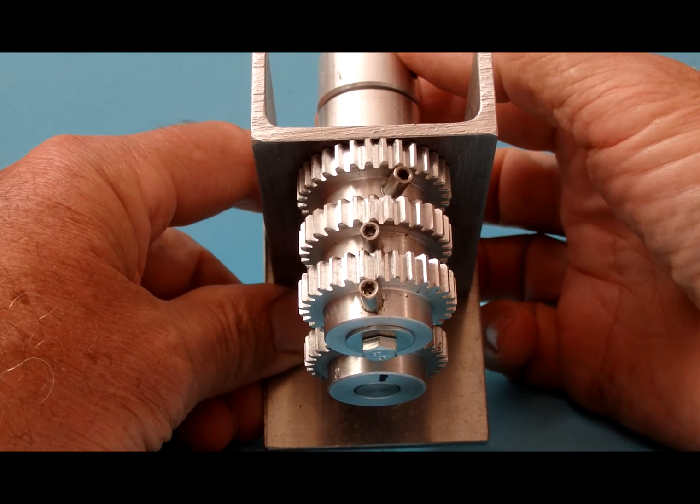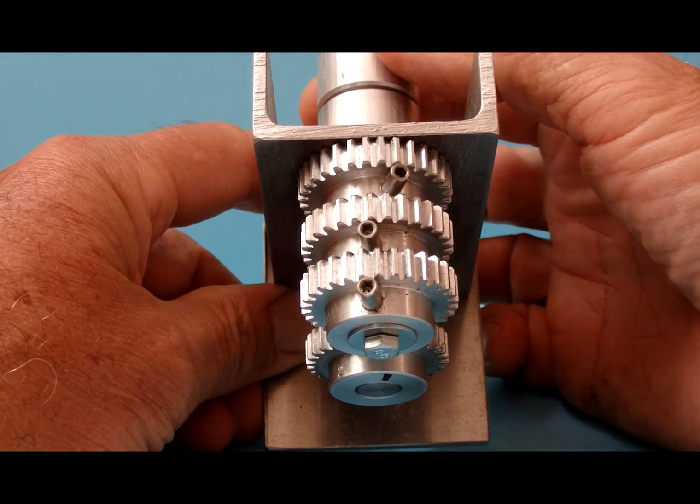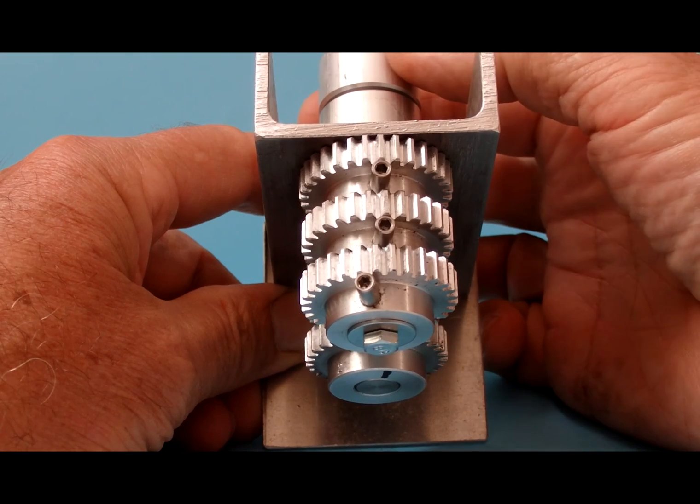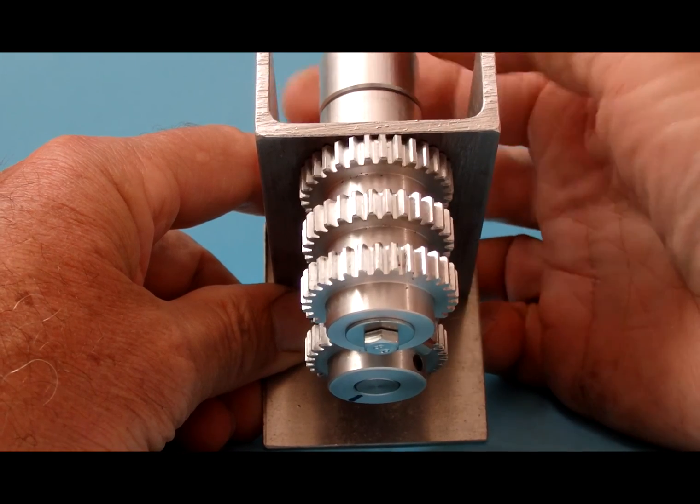If you give 29 turns to the input shaft, the first and second indexes will be aligned. Two more turns, so 31, and now the first and the third indexes are aligned.